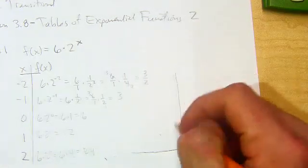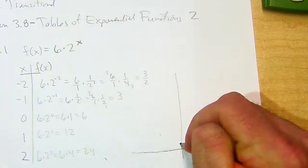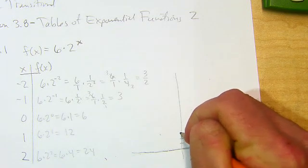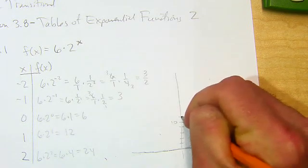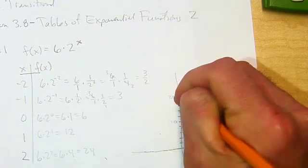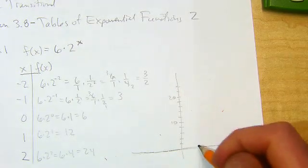It's a little tricky because we got to get up to 24 on our Y. So I'm probably going to count by 2s. I guess count by 2s: 2, 4, 6, 8, 10, 12, 14, 16, 18, 20, 22, 24.